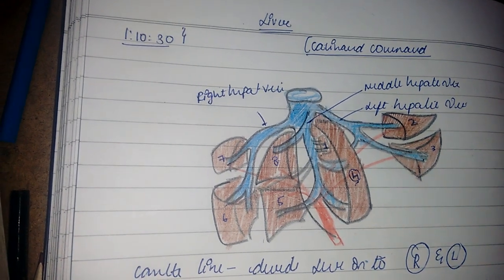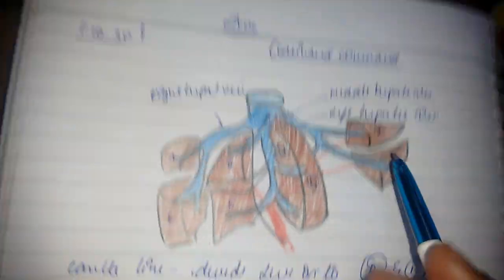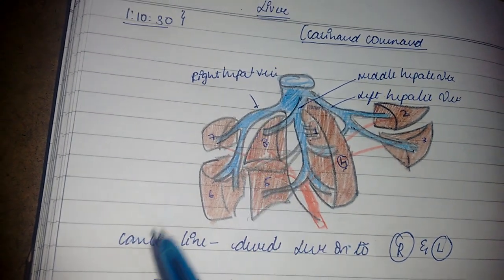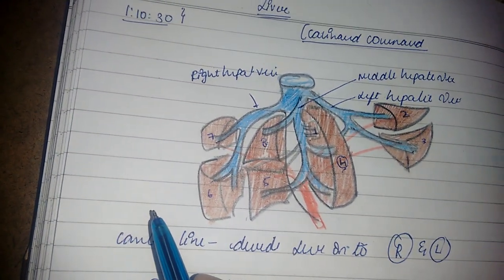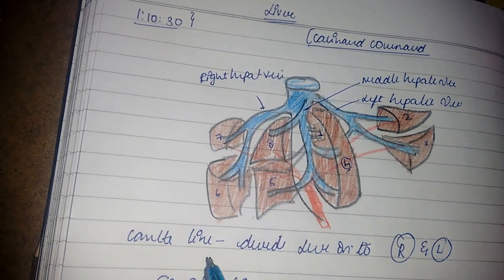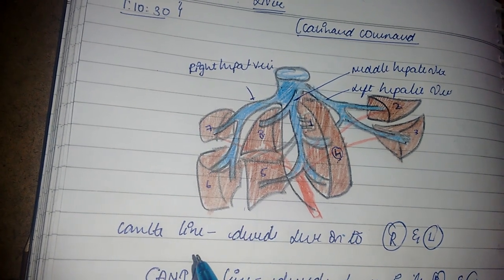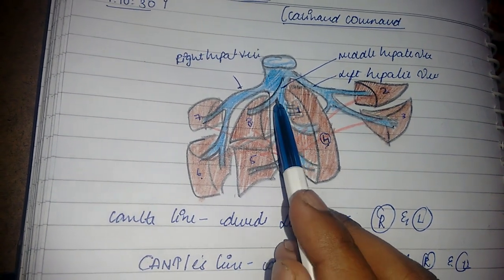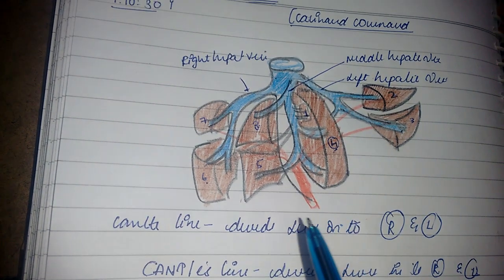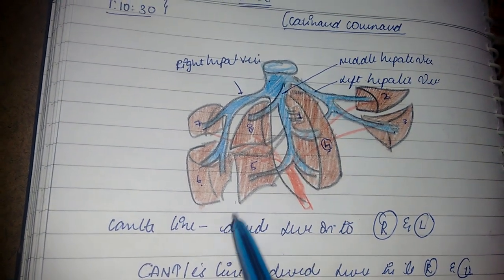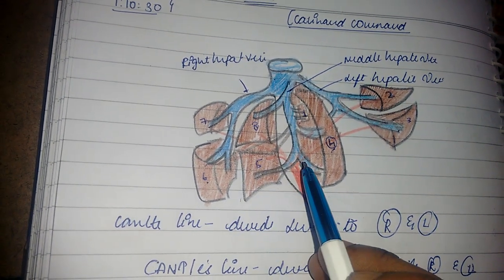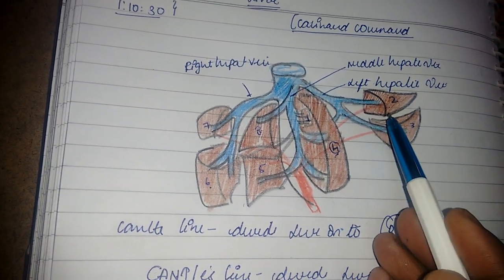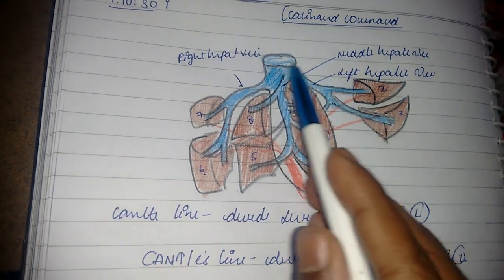There are branches or tributaries drawn from different lobes. The right hepatic vein takes blood from the liver to the inferior vena cava from parts of the right lobe — specifically segments seven and six. The middle hepatic vein takes blood from segments eight, five, and four. The left hepatic vein drains segments two and three. So we have divided the whole liver into eight different segments.